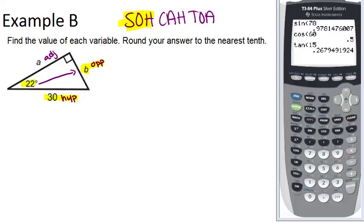So we can set up our equation that sine of 22 degrees equals B opposite over 30 hypotenuse. Now we go over to our calculator, so it can help us out by telling us what sine of 22 is.